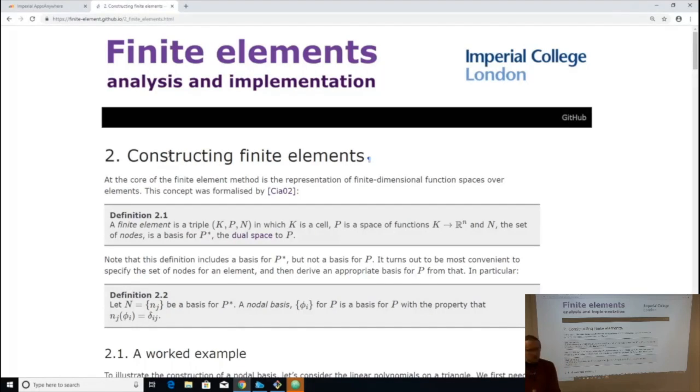The dual space takes in functions in the finite element space and spits out numbers. So you give me a function, and I'll give you a number. And we'll see in a second why it's very convenient for that to be the space that you use. So you define the nodes, you define the polynomial space, and then you back out what the actual basis you're going to use is. And we're going to do that.